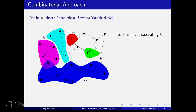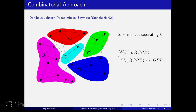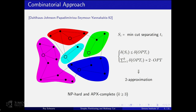For example, with five terminals, you compute for every terminal the min cut that separates that terminal from all others. This gives a two-approximation. If the optimal solution partitions the vertices, the cost of the i-th piece is at least as large as the min cut separating that terminal. Summing over all pieces in opt gives exactly twice the value of the solution, because each edge is counted twice—a very simple and clean two-approximation.